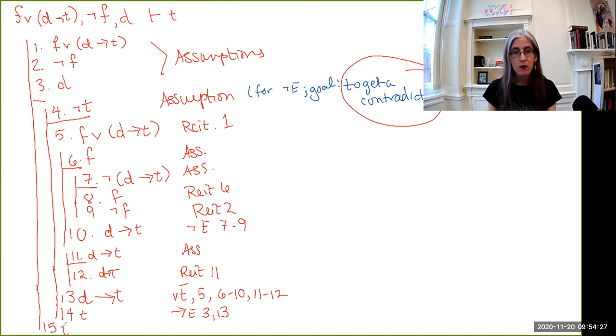So squeeze this in here, line fifteen. We are allowed to prove T through negation elimination, because we started off with a negation here, and we ended up taking it away. And this is the entire sub proof from four to fourteen. Hopefully you can still see that. There you have it. Another proof that shows you how the disjunction elimination rule works.